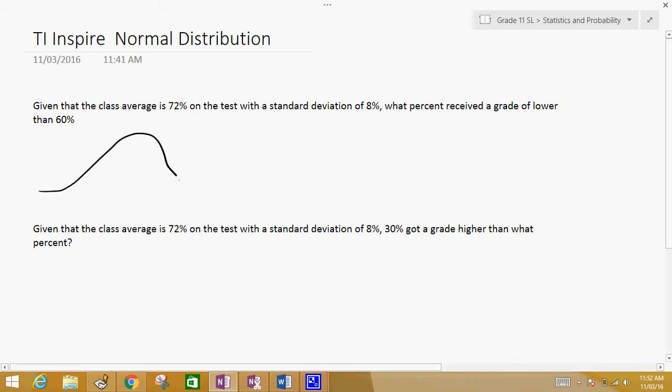So if it's a normal distribution where the mean, the class average, is 72 and a standard deviation of 8, then one standard deviation would be between 80 and 64. So that would be 68% between 64 and 80. Two standard deviations, we can add and subtract 8 more, etc.